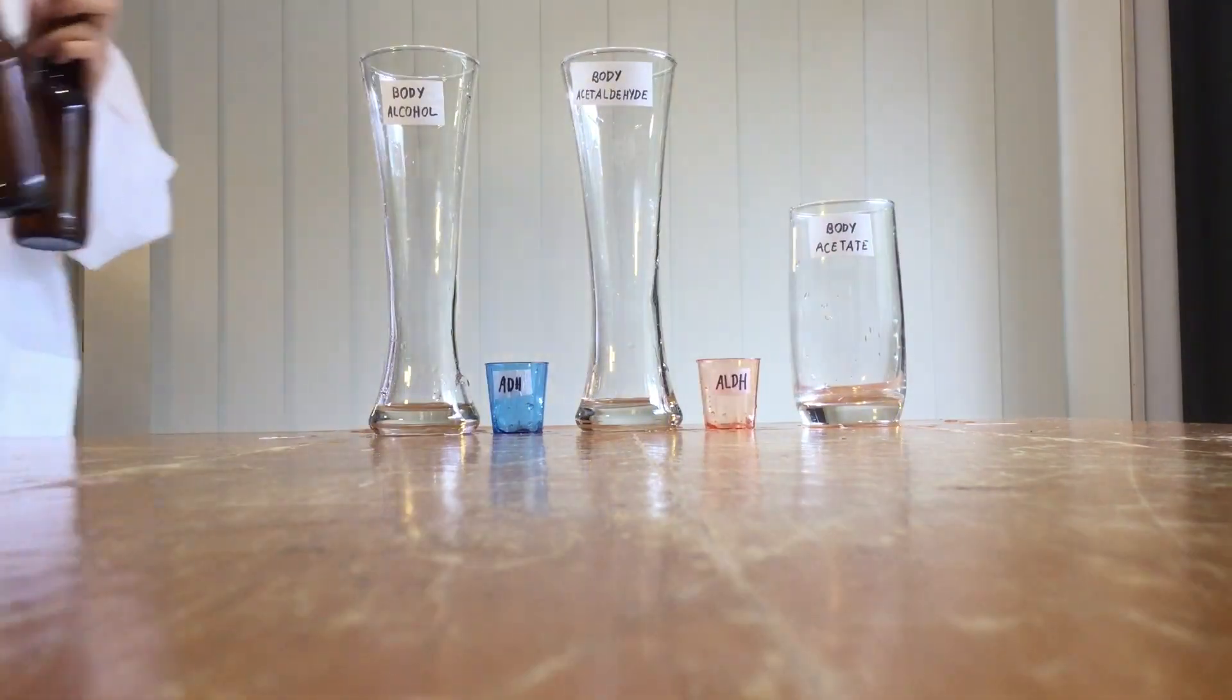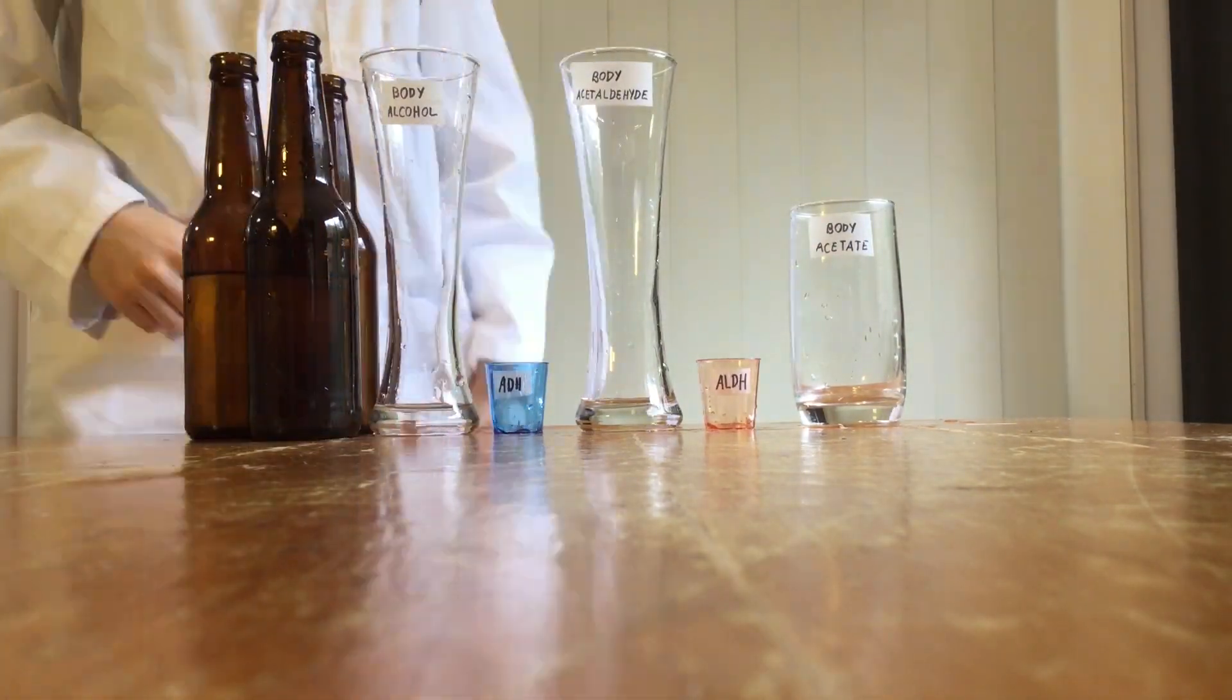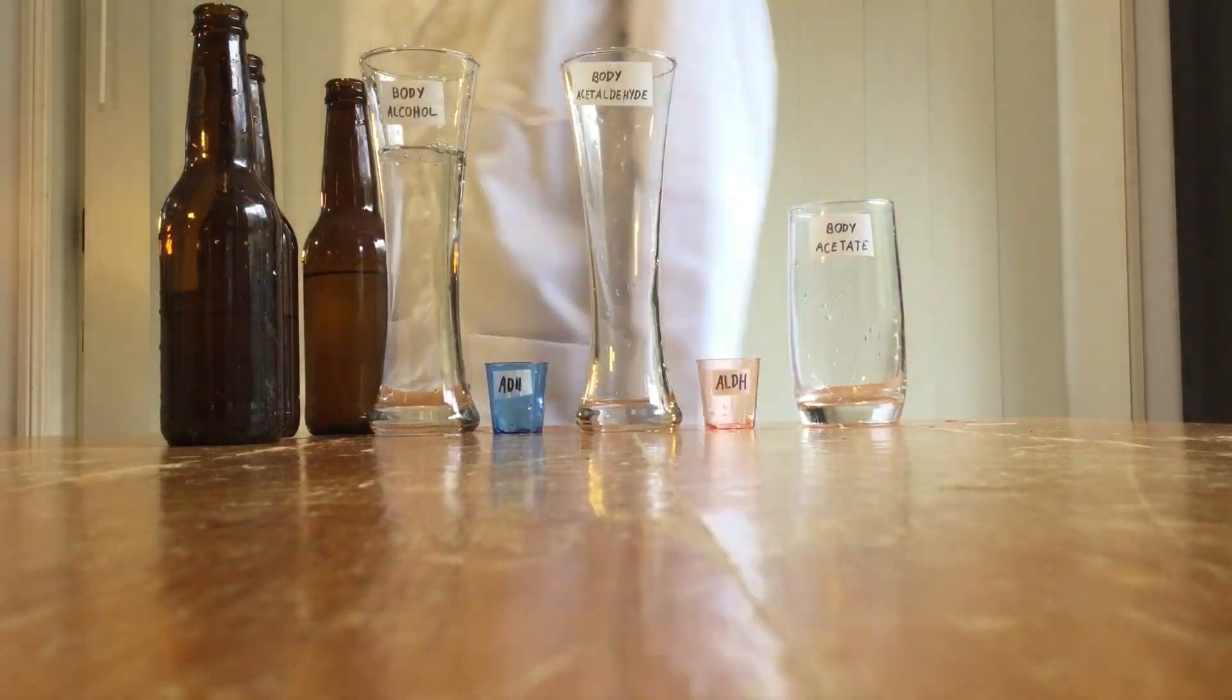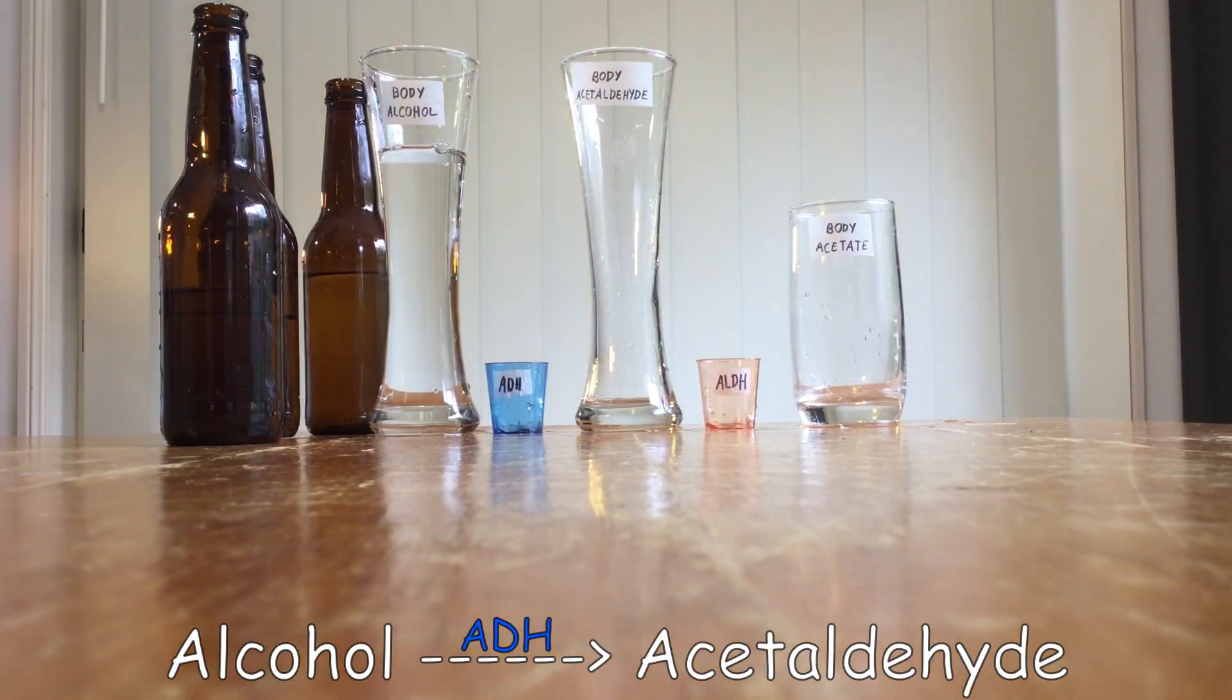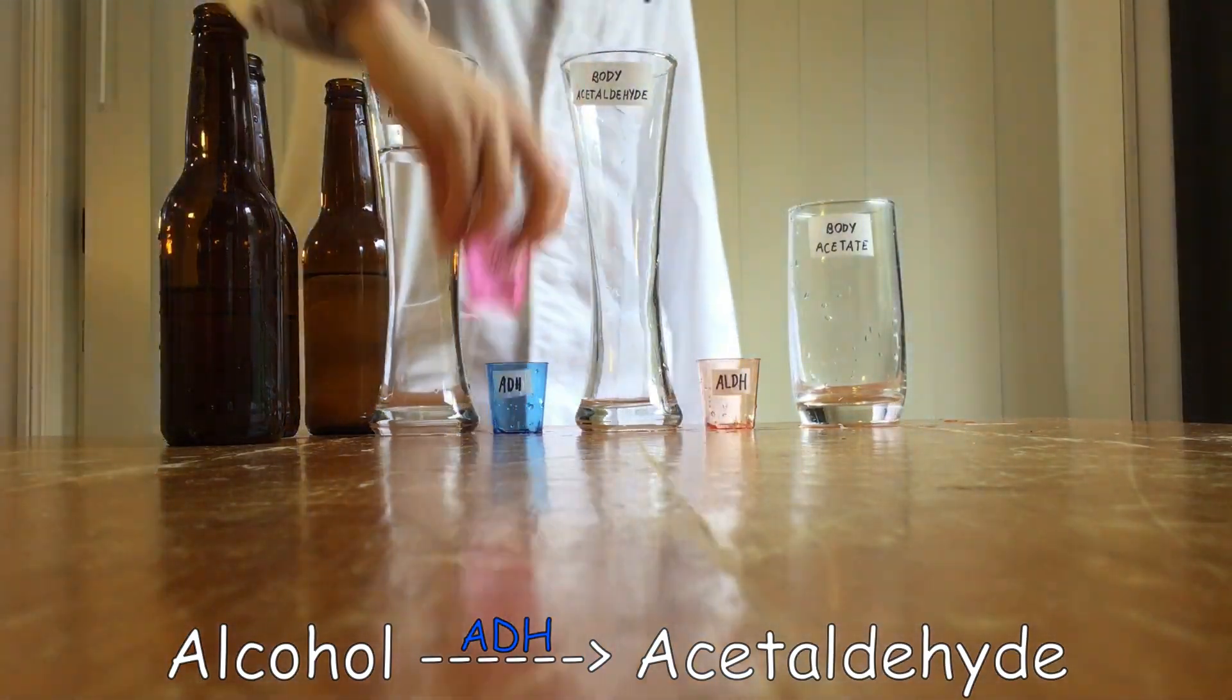So this time let's say you have a couple of beers in a short amount of time. That means more alcohol in the body. The body still uses the ADH pathway, but this time it's also going to use the MEOS pathway with an enzyme called CYP 2E1.